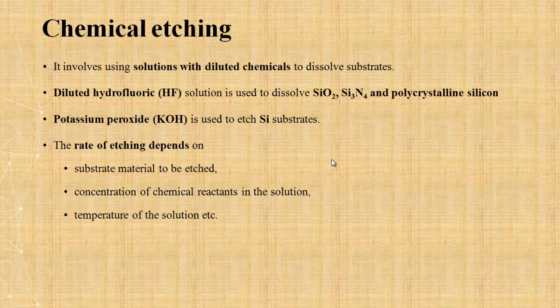In chemical etching, we use a solution to remove the substrate and unwanted materials. The solution contains diluted chemicals. To remove silicon dioxide or silicon nitride, or polycrystalline silicon, we use diluted hydrofluoric solution. To remove silicon substrate or silicon material, we use potassium peroxide.